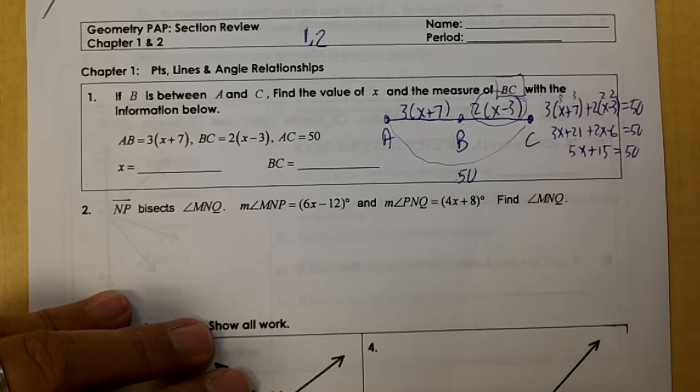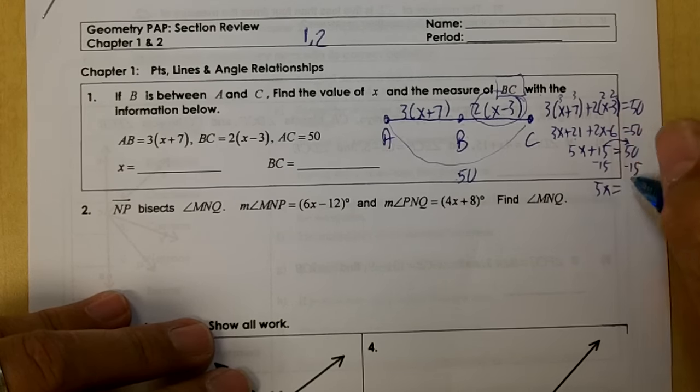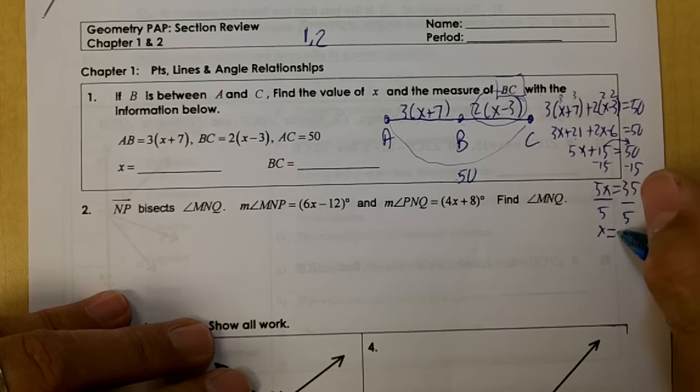So 5X plus 15 equals 50. We're going to subtract 15. You'll get 5X equals 35. Divide by 5, and we'll get 7.